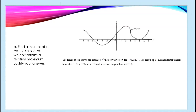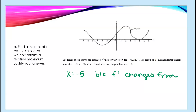Part b: find the values of x at which f attains a relative maximum. The maximum occurs at x = −5, because f prime changes from positive to negative at that point.